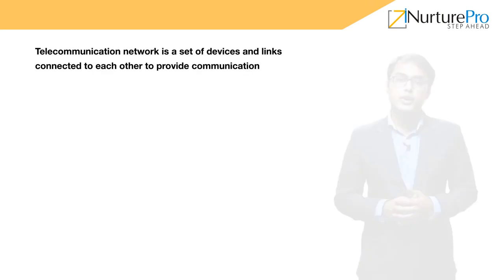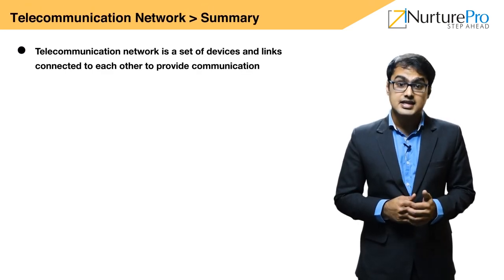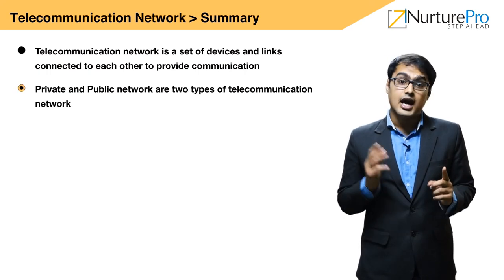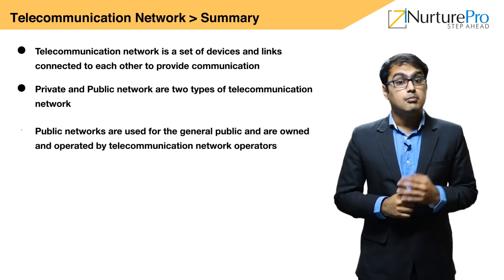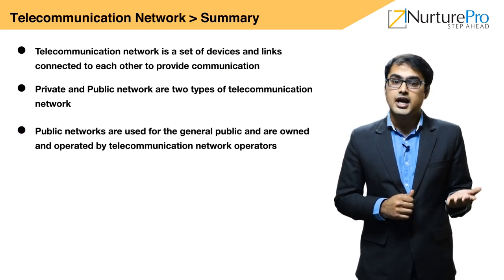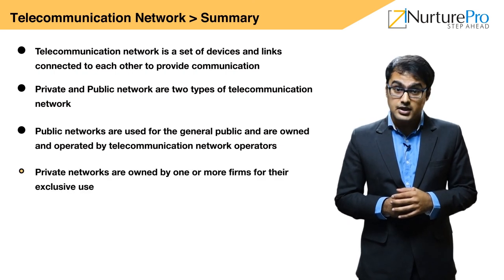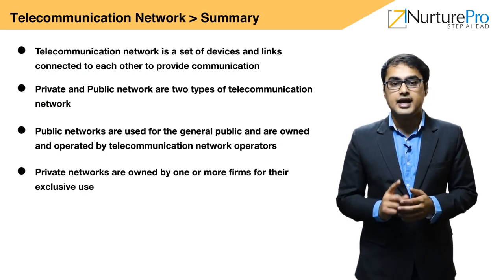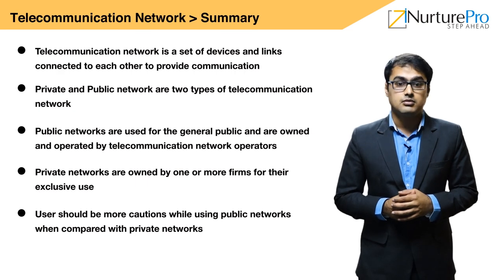Let us have a quick recap on what we discussed. A telecommunication network is a set of devices and links connected to each other to provide communication. Private and public networks are two types of communication network. Public networks are used for the general public and are owned and operated by telecom network operators. Private networks are owned by one or more firms for exclusive use. Users should be more cautious while using public networks compared to private networks.